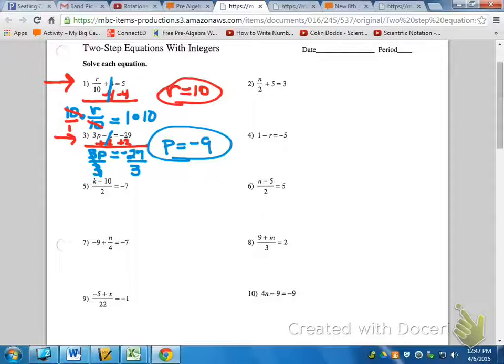K minus 10 over 2. We can't get in there to that K minus 10 until the 2 is dealt with. So when you have a whole expression over an integer, just like number 5,